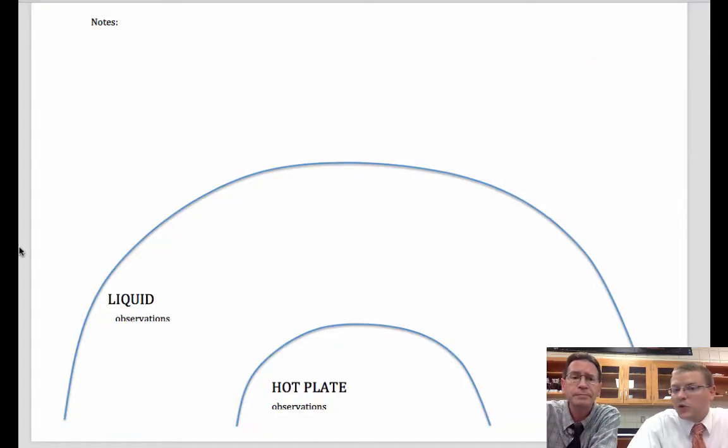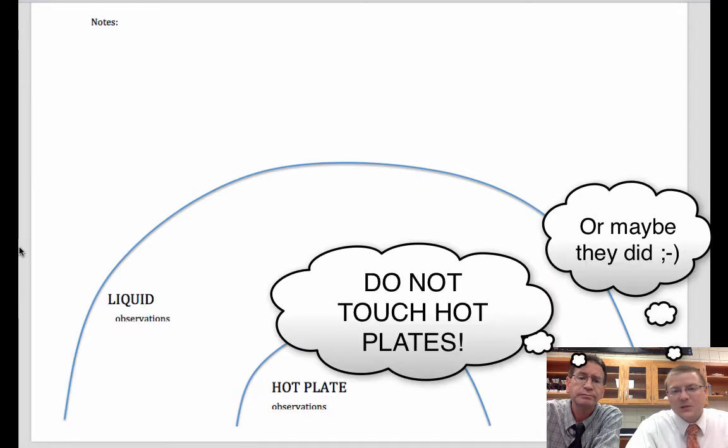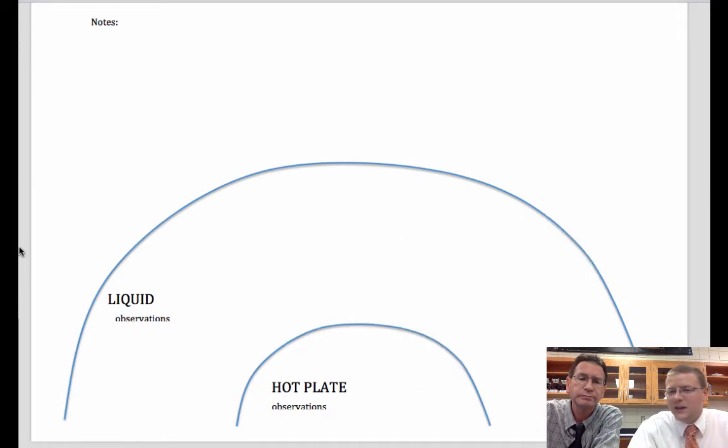So in class, on your whiteboards, we asked you to draw this. We draw these semicircles here, one for the hot plate and one for the liquid, and we had you write observations during that demonstration. Some observations that people said about the hot plate was that it was hot. How did they know it was hot? They could see air moving across the top of the hot plate. No one touched it, but if you put your hand close, you would feel the heat. And another way of transferring energy is through a process called radiation.